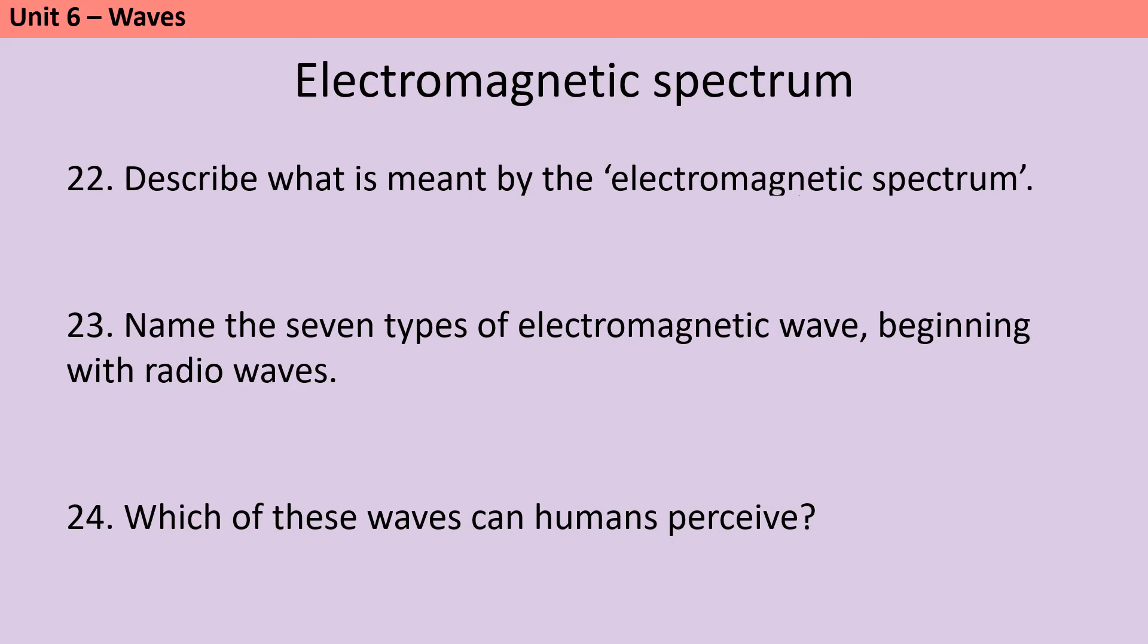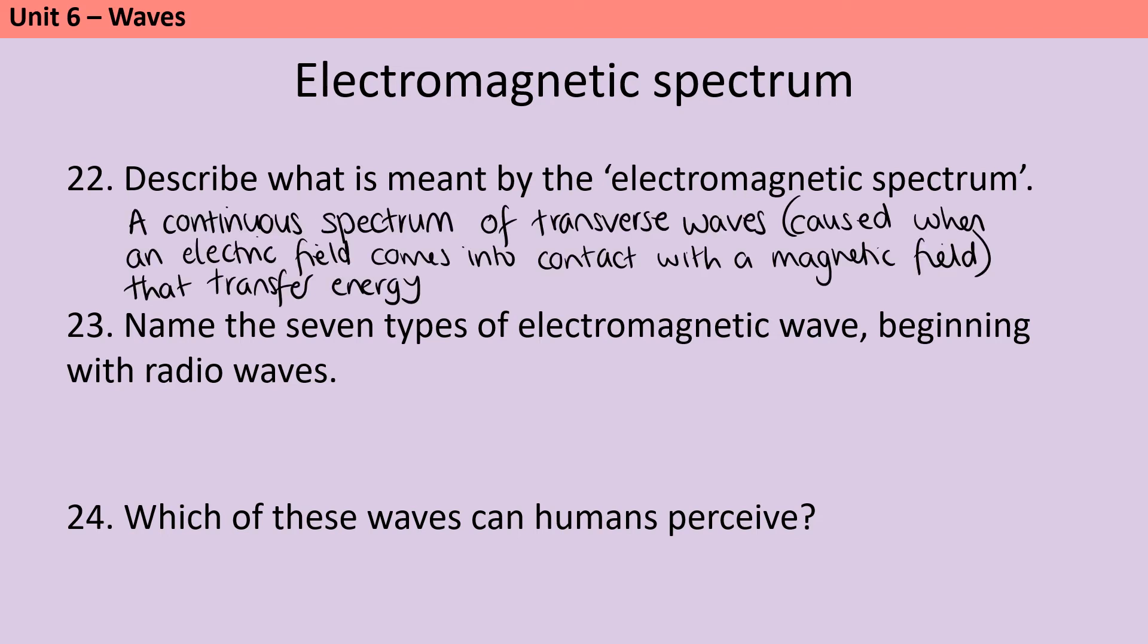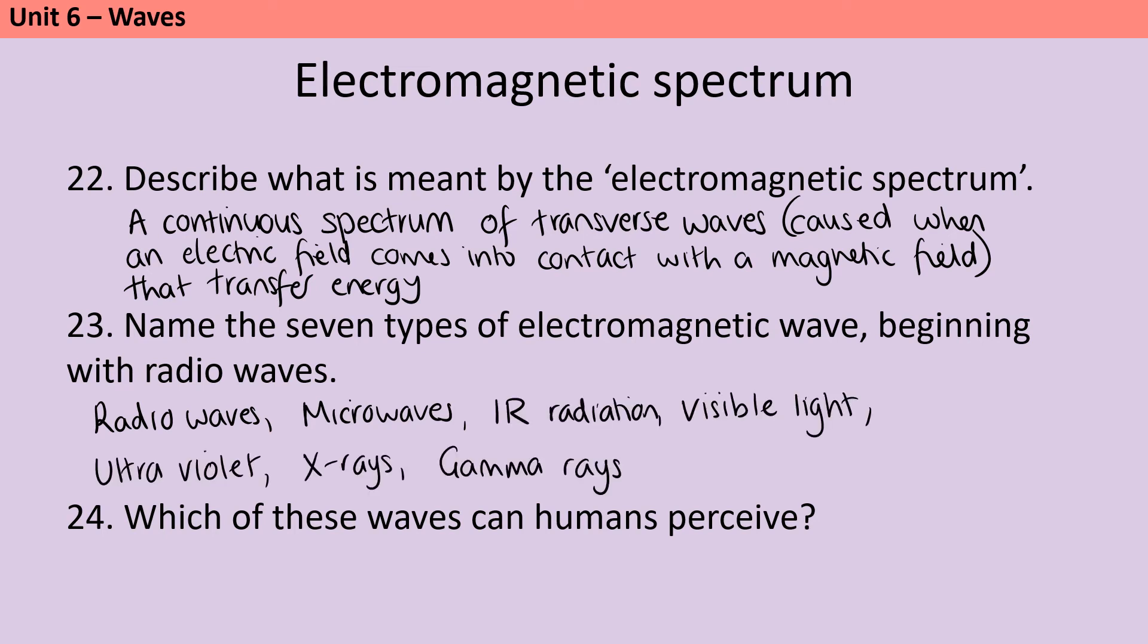When an electric field comes into contact with a magnetic field, this generates a type of transverse wave called an electromagnetic wave. And these can be used to transfer energy. They form a continuous spectrum. And what that means is that there isn't a fundamental difference between a radio wave and a microwave. We just assign different names based on the particular frequency and a particular wavelength. So in the same way that you would look at a rainbow and different people might disagree about where red became orange, you could look at an electromagnetic spectrum and the difference between ultraviolet and x-rays and gamma rays is kind of up for debate. The seven types of electromagnetic wave which you do need to know in order are radio waves, microwaves, infrared radiation, visible light, ultraviolet, x-rays and gamma rays. And if you don't already know them in order, you should look up the electromagnetic spectrum song. Human eyes are only capable of perceiving visible light out of this spectrum.